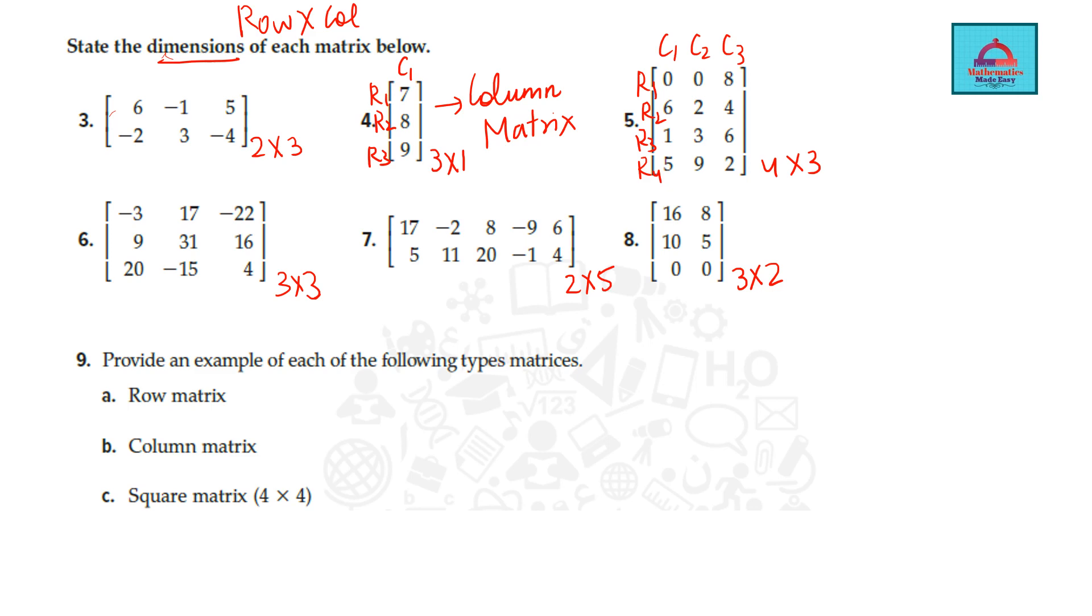Now provide an example of each of the following. You have to give one row matrix, means it will have only one row. Any number of columns is okay. Let's write some elements: 5, 10, 15. So it just has one row but three columns. That's a row matrix.